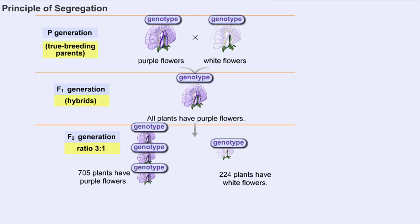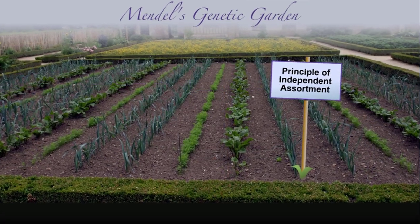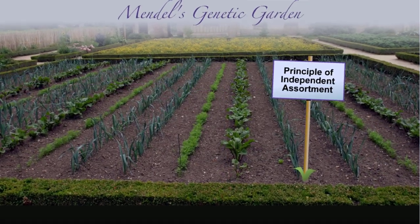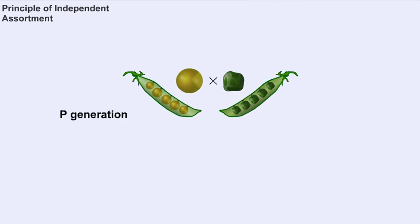This is the homozygous recessive phenotype. In order for the recessive phenotype — in this case white flowers — to be expressed, the progeny must carry two copies of the recessive allele. Following one trait at a time enabled Mendel to simplify his experiments and deduce the principles of dominance and segregation.